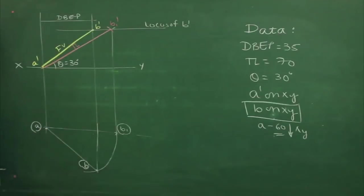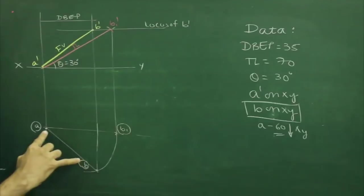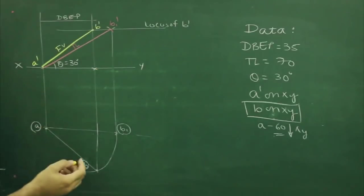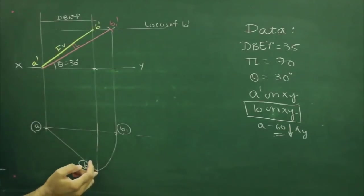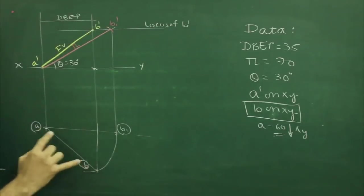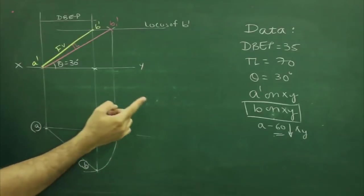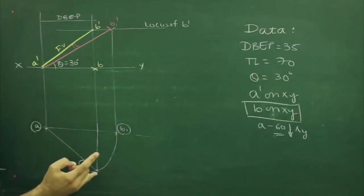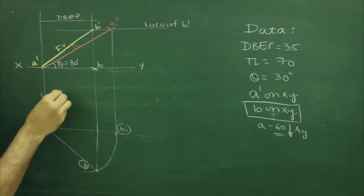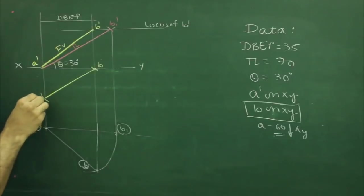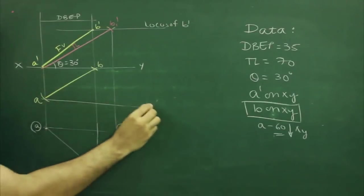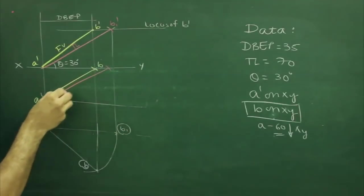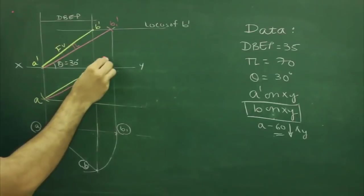Wherever you cut, that would be B. Join B to B. Then take B to A in your measurements. Now we know that this is our top view, and B is our next variable, so we can mark this point as B. Take B to A in your measurements and from B you cut out this side — that would be B. We know the true length is 70 mm, so from here we can cut the true length as well. That is B.